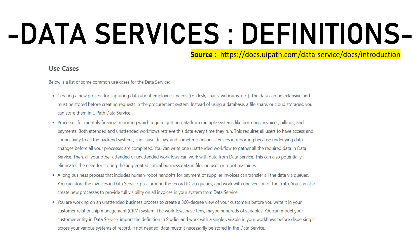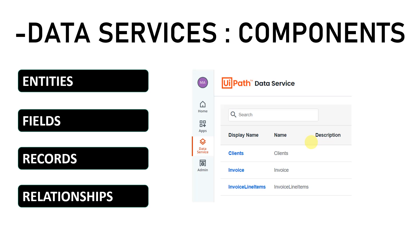In that same link there are other use cases provided by UiPath where you can leverage data services; you can relate them to your own projects. Now let's discuss the key components of data services. Data services has four key components: entities, fields, records, and relationships.